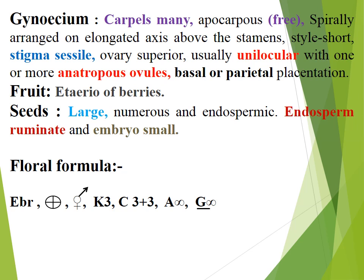Ovary with one or more anatropous ovules, basal or parietal placentation. Fruit — etaerio of berries. Seeds large, numerous and endospermic. Endosperm ruminate and embryo small. Floral formula follows.